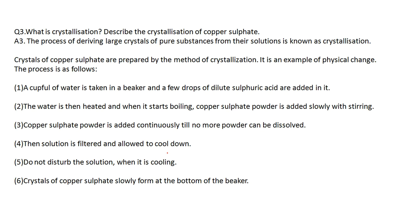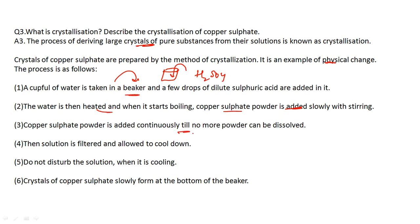Next: what is crystallization? Describe the crystallization of copper sulphate. Crystallization is a process in which we make crystals from pure substance solutions. For crystallization of copper sulphate — this is a physical change — first take water in a beaker, add a few drops of sulfuric acid, then heat it and start adding copper sulphate continuously until no more can be dissolved.